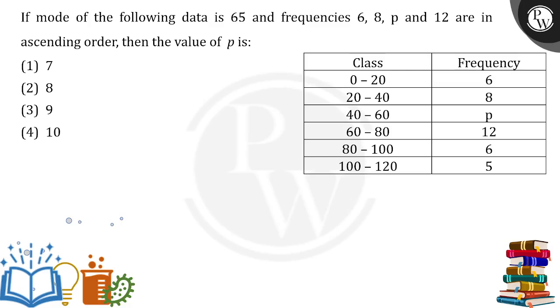In this case, the mode is given as 65. The frequencies are given, but one of the frequencies is missing, that is p, and that is what we need to find out.